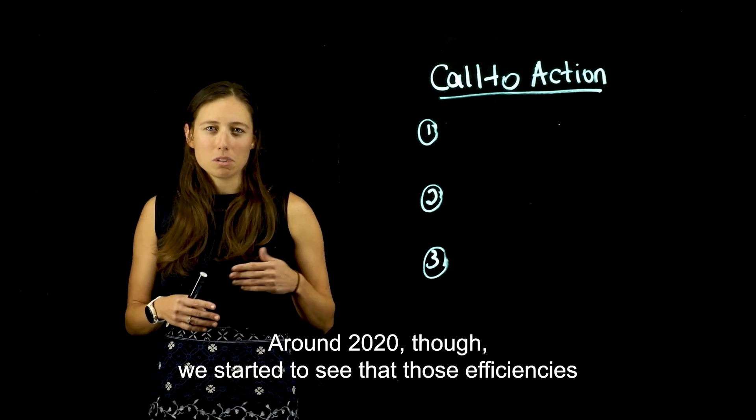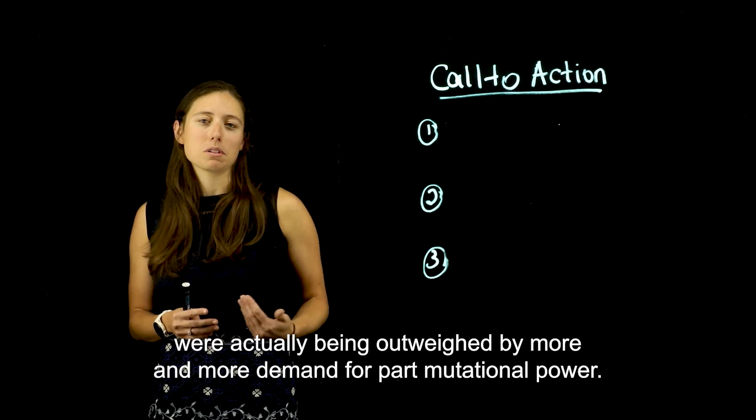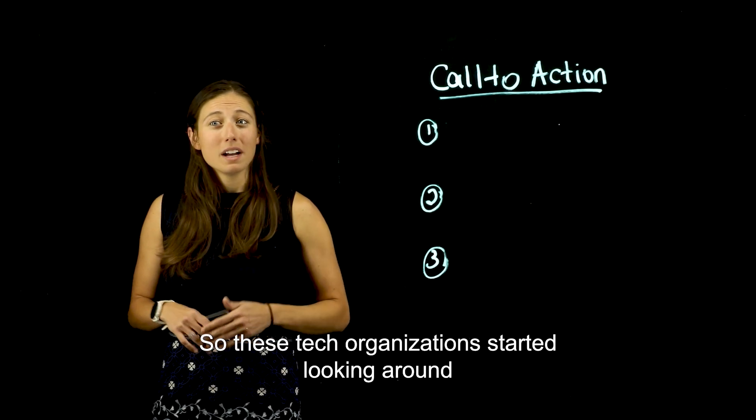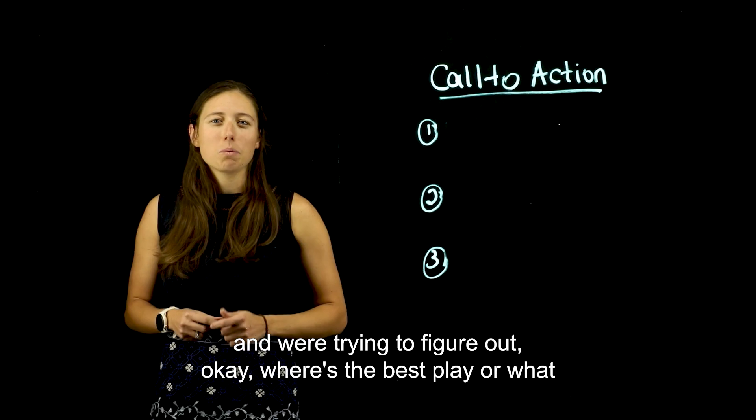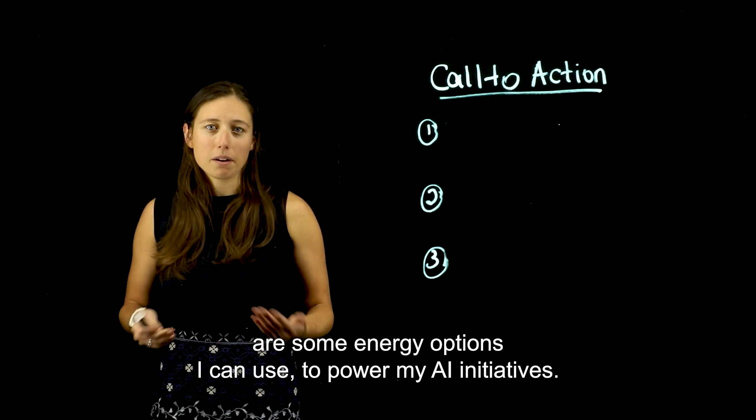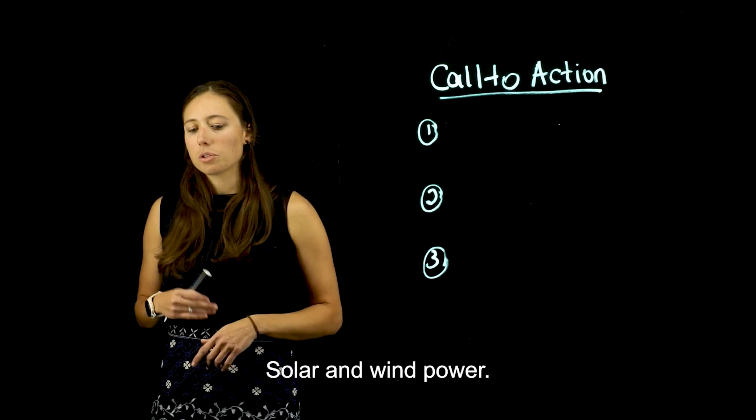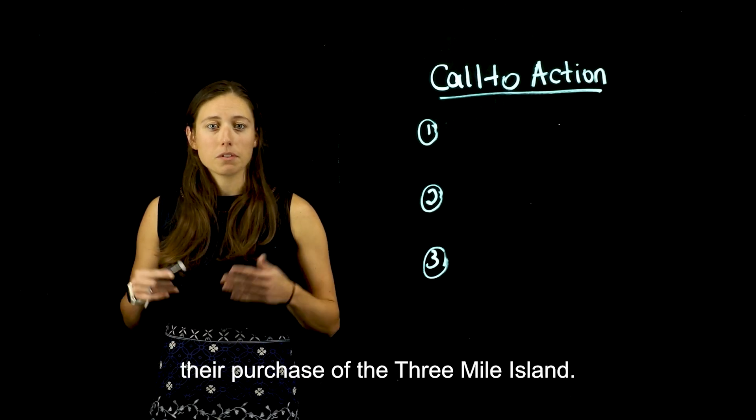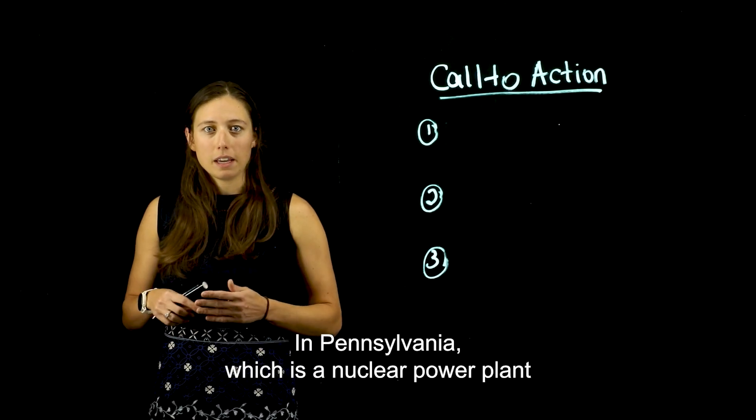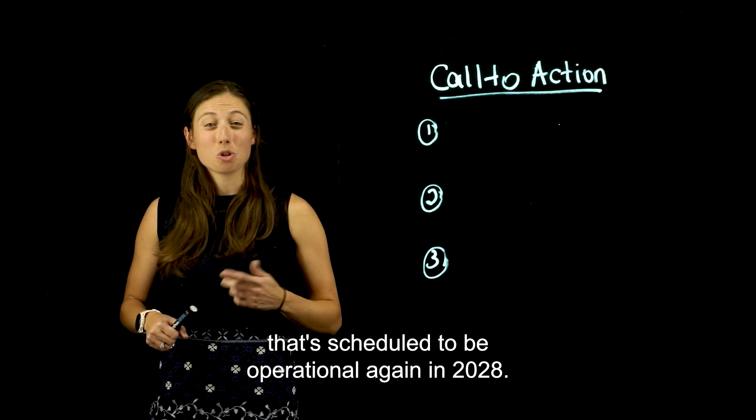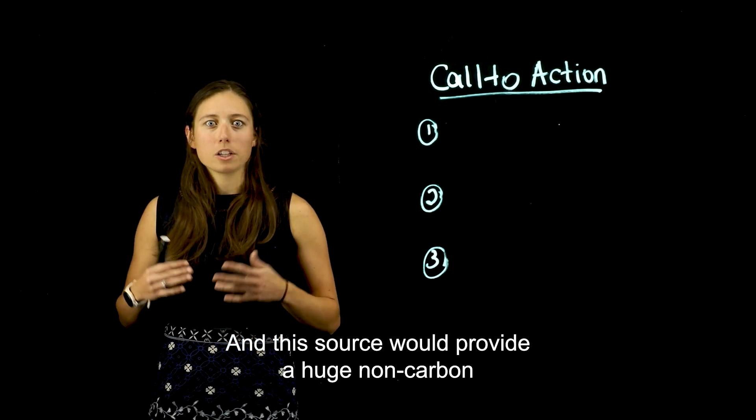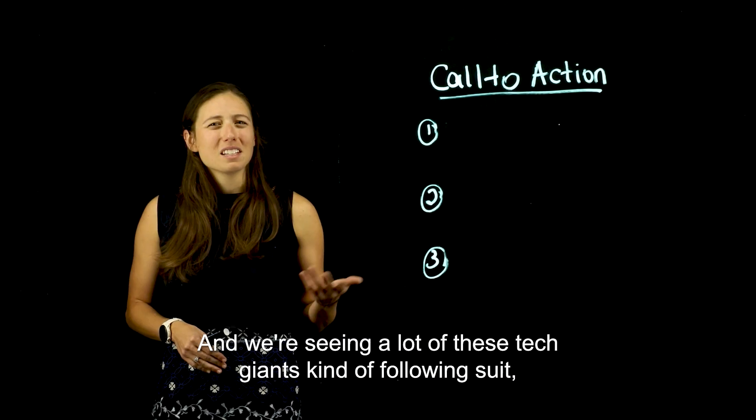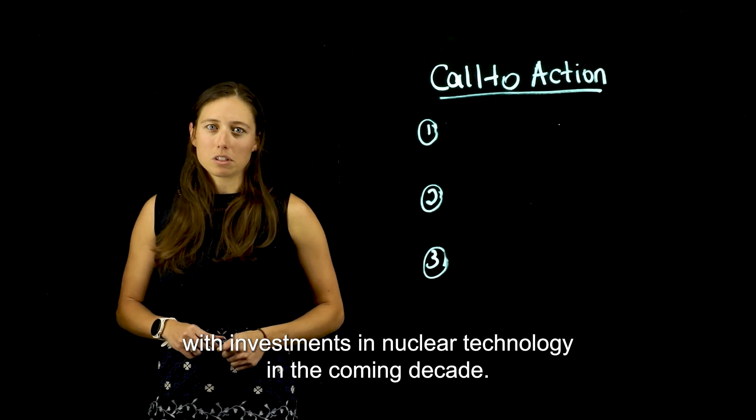Around 2020, though, we started to see that those efficiencies were actually being outweighed by more and more demand for computational power, a lot of that being driven from AI use cases. So these tech organizations started looking around and were trying to figure out, okay, where's the best place, or what are some energy options I can use to power my AI initiatives? So they looked at geothermal power, solar and wind power. And as I mentioned earlier, Microsoft just recently announced their purchase of the Three Mile Island in Pennsylvania, which is a nuclear power plant that's scheduled to be operational again in 2028. And this source would provide a huge non-carbon energy option for Microsoft to power their AI initiatives. And we're seeing a lot of these tech giants kind of following suit with investments in nuclear technology in the coming decade.